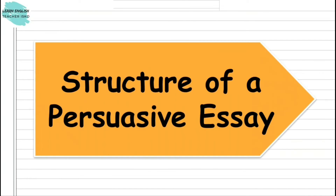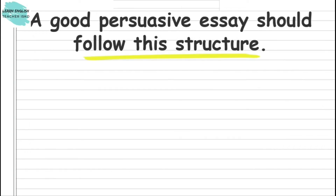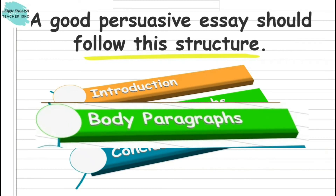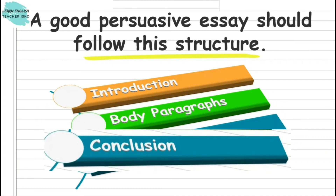This time, let us talk about the structure of a persuasive essay. I know that you are familiar with how we outline an essay. Basically, it is composed of introduction, body paragraph, and conclusion. In this part of our discussion, I am going to give you the key points that should be seen in each part. So please keep on watching. A good persuasive essay should follow this structure: first, introductory paragraph; second, body paragraphs; and lastly, the conclusion.